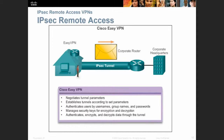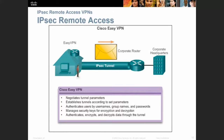For IPsec remote access, we have Easy VPN with a tunnel through which all interested traffic goes to the corporate router and then to corporate headquarters servers. The Cisco Easy VPN negotiates tunnel parameters, establishes the tunnel, authenticates users by username, group name, and password, manages security keys for encryption and decryption, and authenticates, encrypts, and decrypts data through the tunnel. We will do this in the lab.